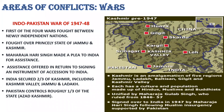Now let us discuss various areas of conflicts, starting with wars fought between the two countries. First, the Kashmir War of 1947. It is the first of the four Indo-Pakistan wars. During the time of partition, Jammu and Kashmir was a princely state. The British had given all princely states the choice to either join India, join Pakistan, or remain independent. The ruler of Kashmir during that time was Maharaja Hari Singh.